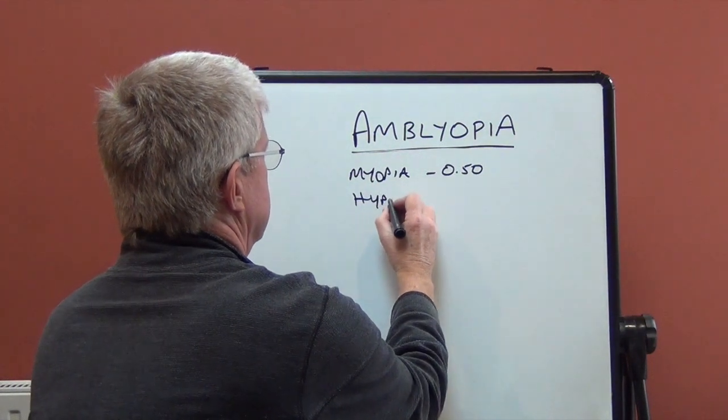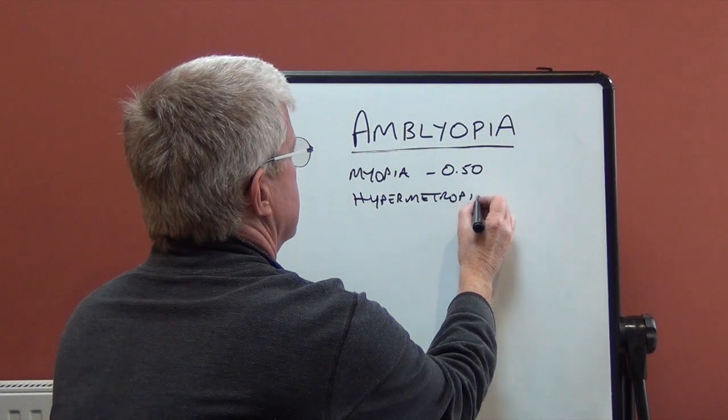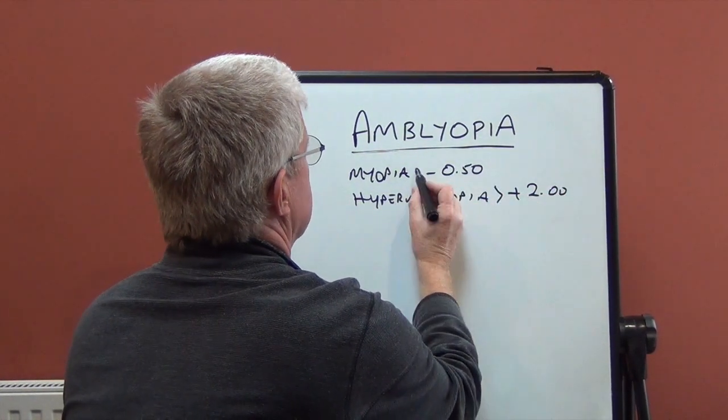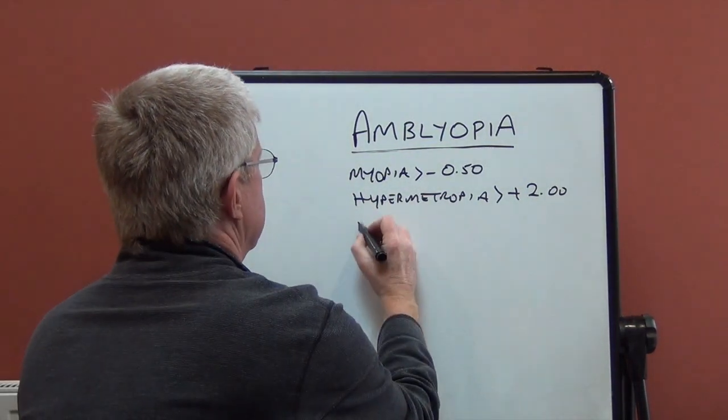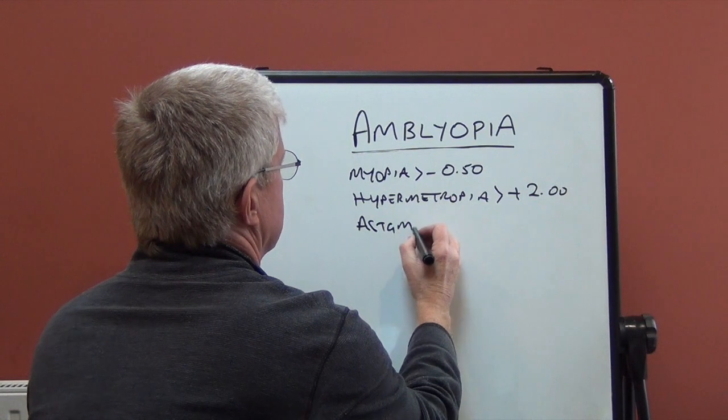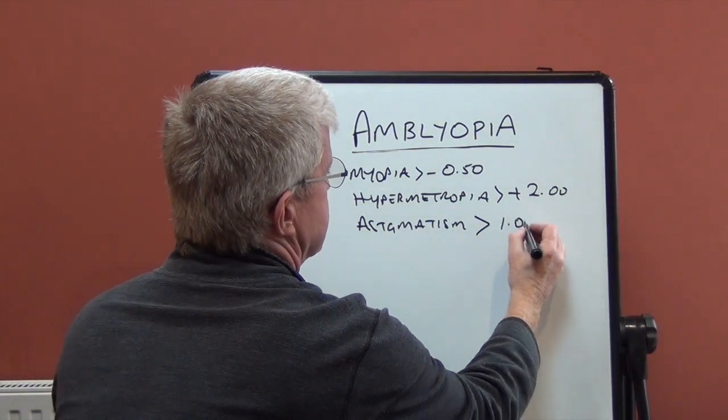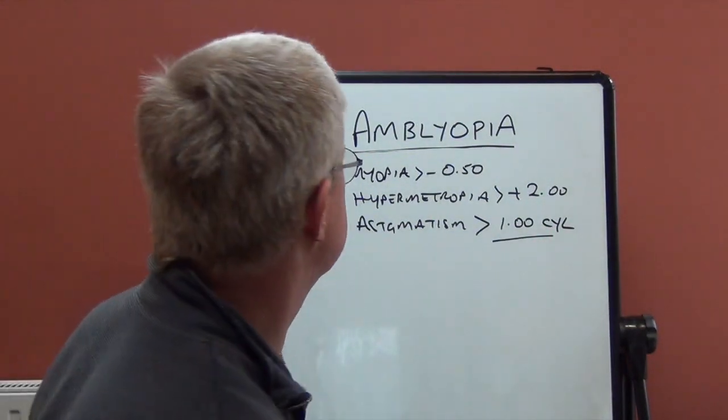With hypermetropia, anything over plus two, greater than plus two is a problem. Astigmatism, anything over one cylinder, is a problem and can develop into amblyopia.